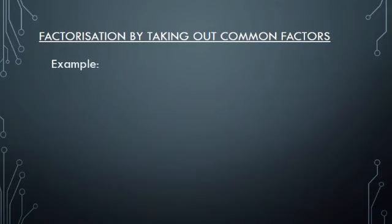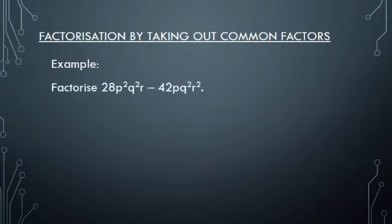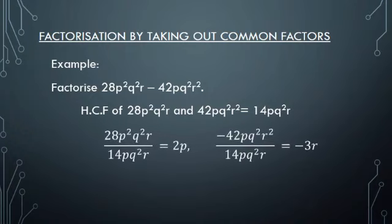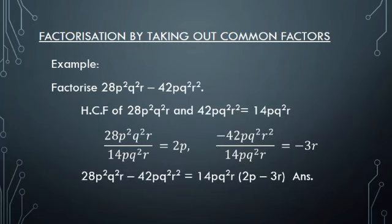Now let us see an example of factorization by taking out common factors. Factorize 28p²q²r − 42pq²r². The HCF of both terms is 14pq²r. When you divide the first term by the HCF, you get 2p, and when you divide the second term by the HCF, you get −3r. So the factorization of the given polynomial is 14pq²r(2p − 3r).